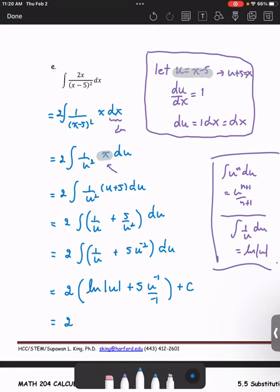The last step, we replace u with the quantity x minus 5 to finish up the problem.